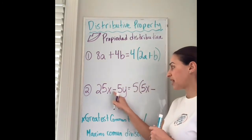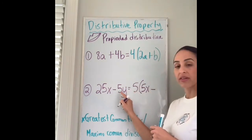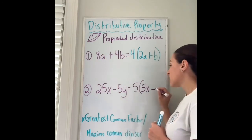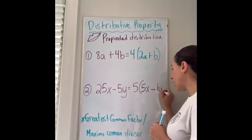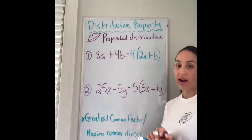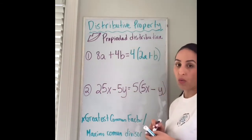Minus, keep the same sign, and 5 divided into 5 is 1. So I can write 1y in parentheses or I could just get rid of the 1 and just leave y.